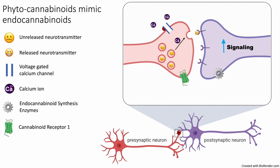Meanwhile, the presynaptic neuron contains cannabinoid receptors that allow it to respond to this negative feedback. When endocannabinoid synthesis enzymes produce endocannabinoids, they travel backwards and bind to cannabinoid receptors. Cannabinoid receptor activation then initiates a signaling cascade that blocks the ability of calcium to induce neurotransmitter release. As a result, the signaling on the postsynaptic cell is brought down to normal levels.